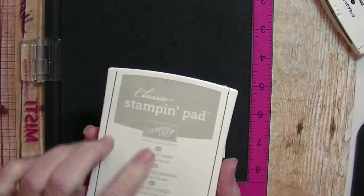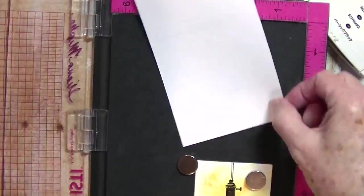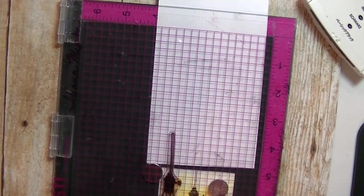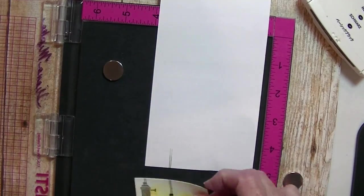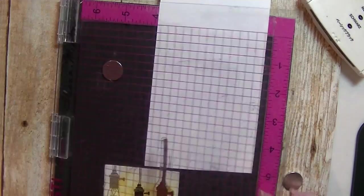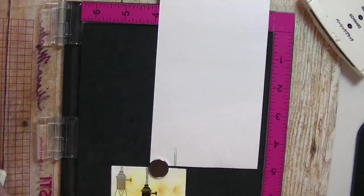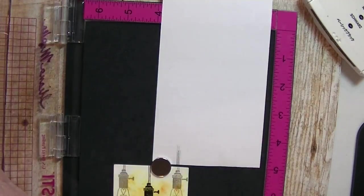Right now I'm just showing you how I stamped three light bulbs on a die-cut square. The center light bulb is stamped in archival basic black ink, while the side light bulbs are stamped in Sahara sand ink.